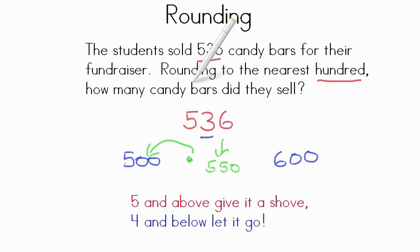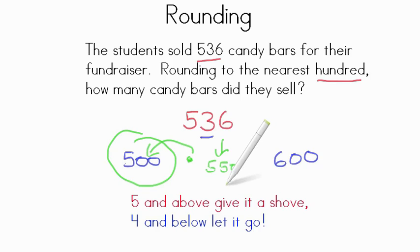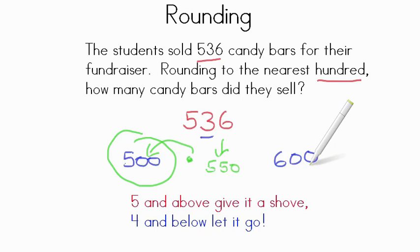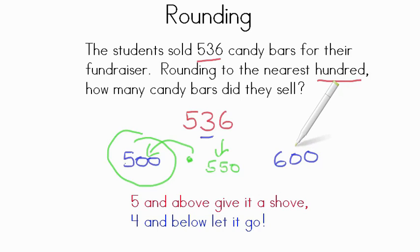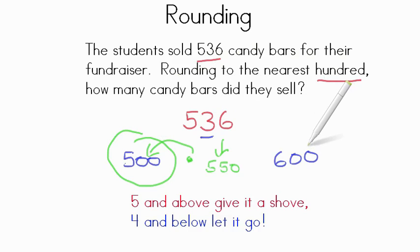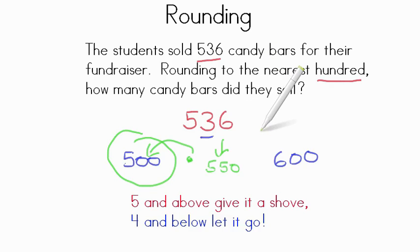Rounding to the nearest hundred, how many candy bars did they sell? About 500 candy bars. Today we've been practicing rounding. To help you with your rounding, use your number line and remember: 5 and above, give it a shove — or below, let it go. When you can find your two benchmark numbers and then look for your midpoint, it'll make rounding really easy for you. Great job and I can't wait to talk to you more about math soon.